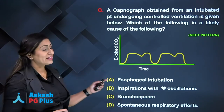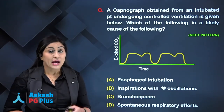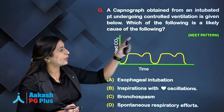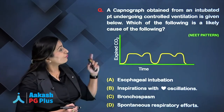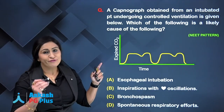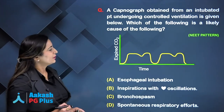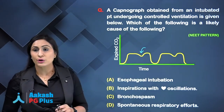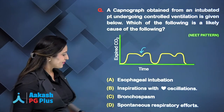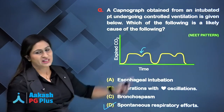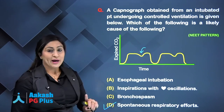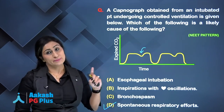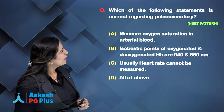Returning to the question: a capnogram is obtained from an intubated patient undergoing controlled ventilation — which of the following is a likely cause? Looking at the capnogram shown, you can immediately identify curare's notch. Therefore, the answer is spontaneous respiratory efforts. Please go back and revise your capnogram patterns, as this is almost always an exam question.